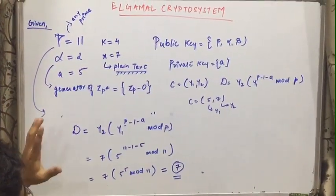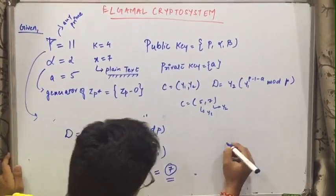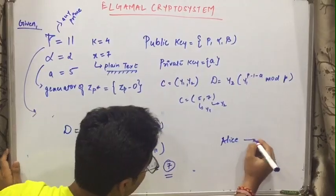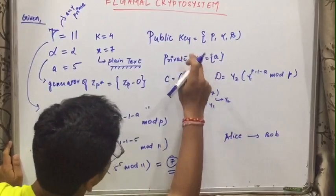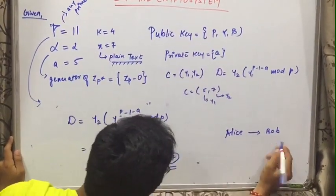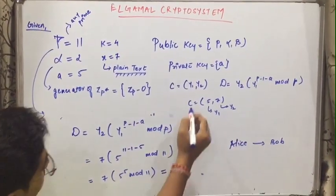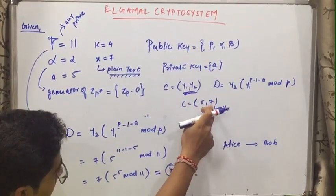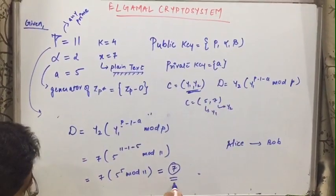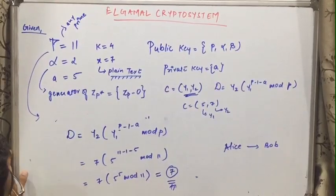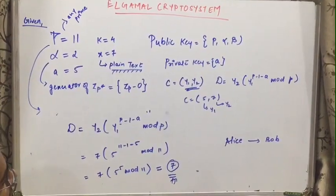So what we did basically is, we were having a public and private key which was generated by Bob as we have sent the message from Alice to Bob alright. So Bob generated two keys that is public key and private key which he, public key he shared to the Alice. And Alice encrypted that message in terms of y1 and y2 which we found out that is 5 and 7. And using that 5 and 7, we decrypt that message and we got the answer as 7 which we earlier encrypted. So this was all about ElGamal Crypto System and thanks for watching. Thank you.